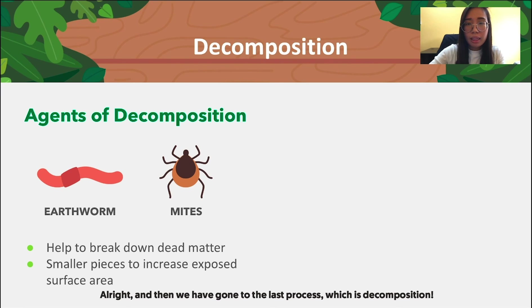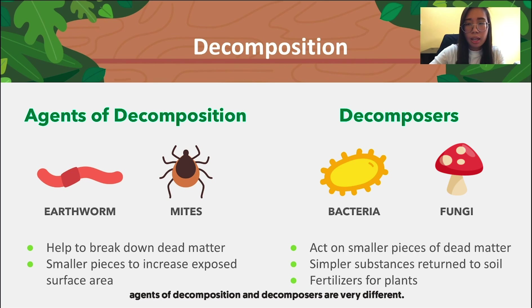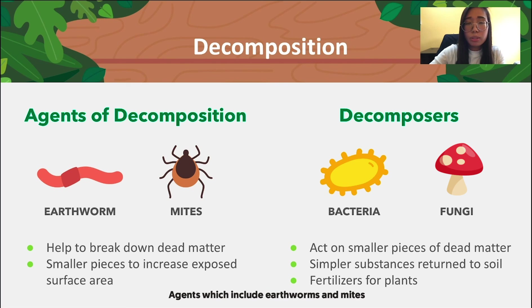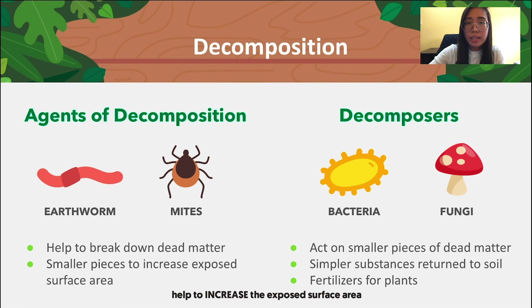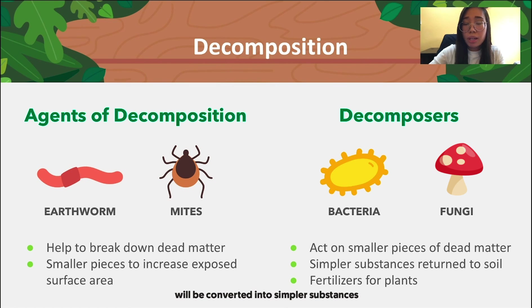For decomposition, it is very important to note that agents of decomposition and decomposers are very different. Agents, which include earthworms and mites, help to break down dead matter into smaller pieces. These smaller pieces increase exposed surface area for the decomposers to act on. The smaller pieces of dead matter are then converted into simpler substances and returned to the soil as fertilizers for plants in the nutrient cycle.